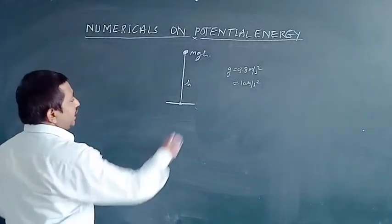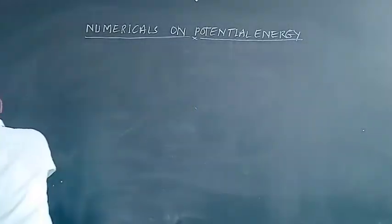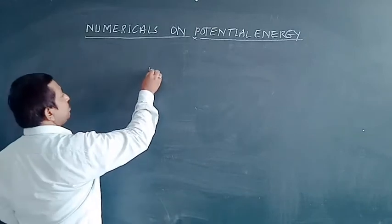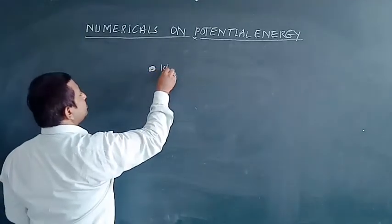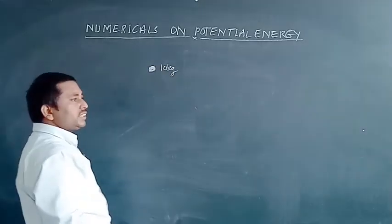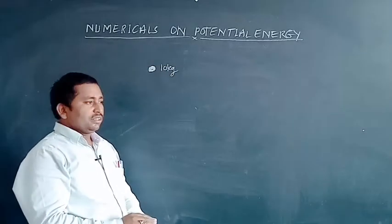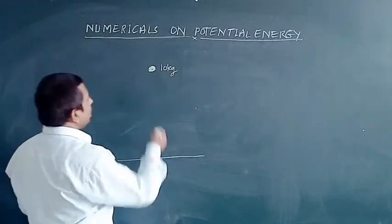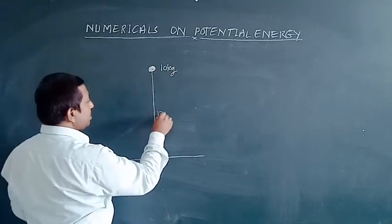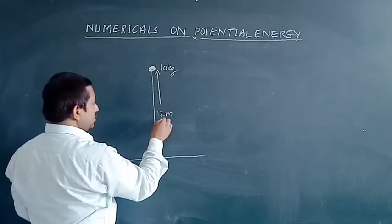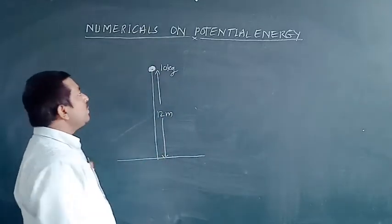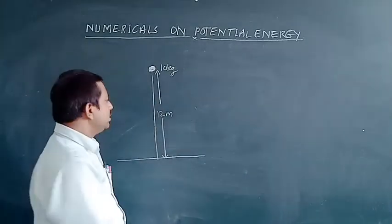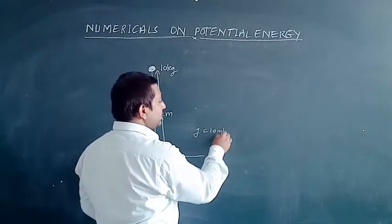Let us take our first numerical problem. If we assume an object that has a mass of 10 kg and this was raised by a height of 12 meters from the surface of the ground, how much potential energy is possessed by such an object? Take g = 10 m/s².